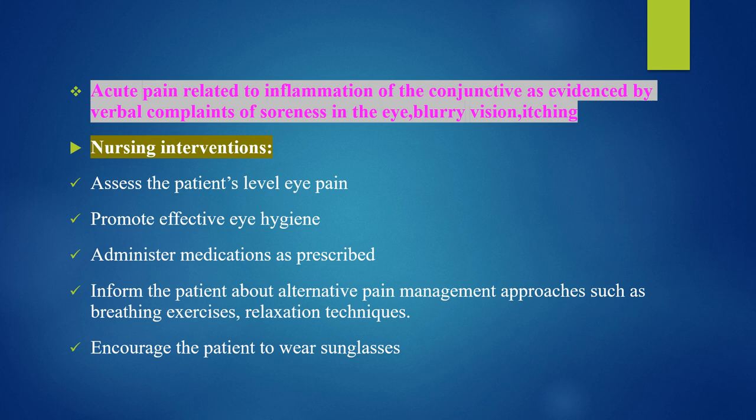Nursing diagnosis 3: Acute pain related to inflammation of the conjunctiva, as evidenced by verbal complaints of soreness in the eye, blurry vision, and itching. Interventions: Assess the patient's level of eye pain, promote effective eye hygiene, administer medications as prescribed, inform the patient about alternative pain management approaches such as breathing exercises and relaxation techniques, and encourage the patient to wear sunglasses.